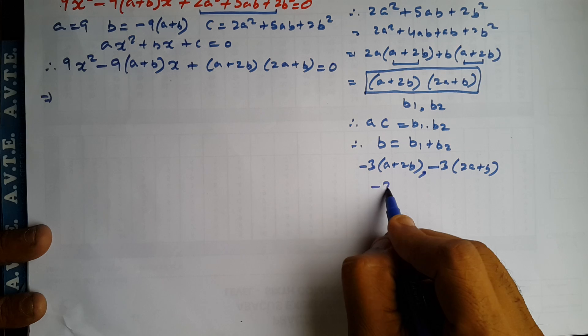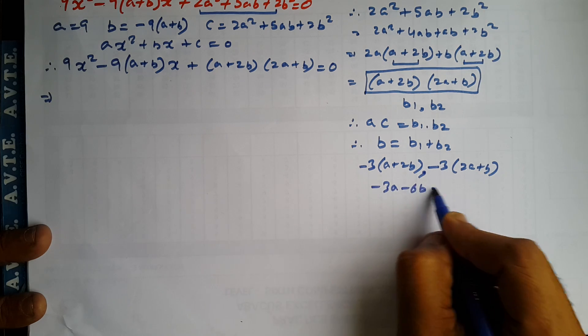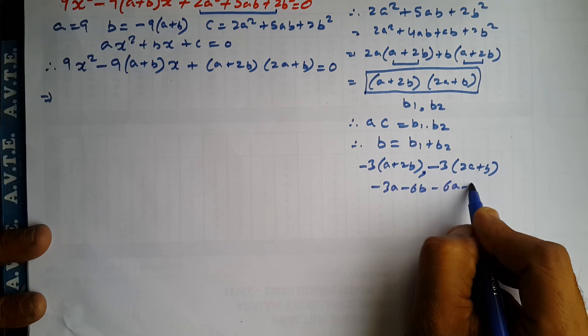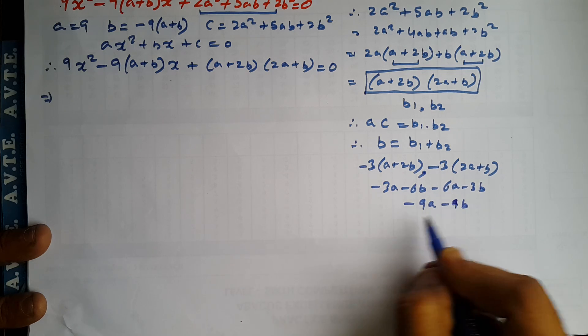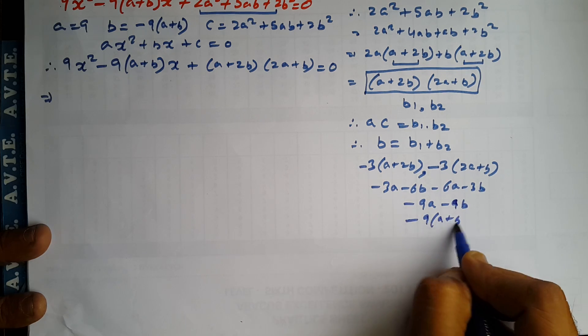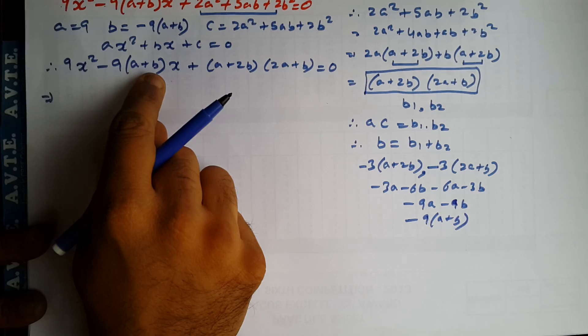When you add them minus 3A minus 6B minus 6A minus 3B it will become minus 9A minus 9B. That is minus 9A plus B. This is coming.